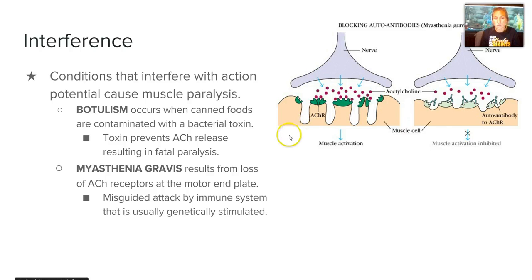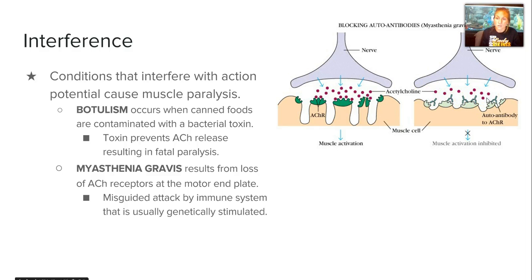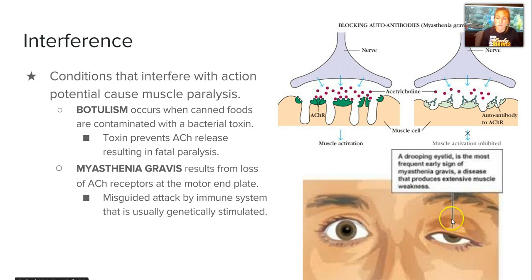There is also a genetically stimulated disorder that causes interference called myasthenia gravis. It's a misguided attack by the immune system where autoantibodies take up those receptor sites. Therefore, the ACH cannot bind, and we have weakening of muscles. It's usually indicated early on by a drooping eyelid.